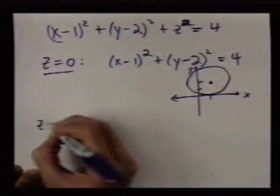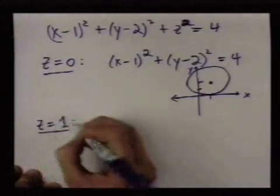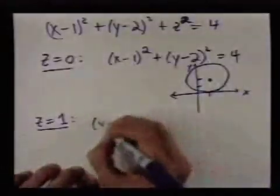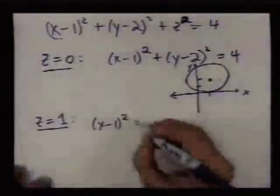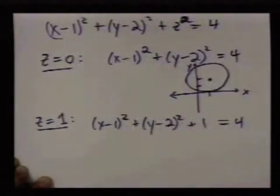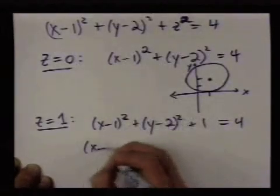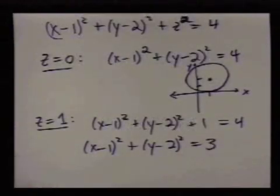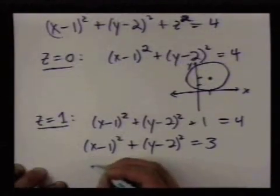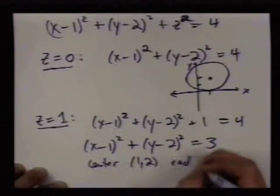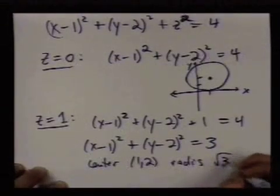And what happens when I set z equal to 1, for example? The equation turns into x minus 1 squared plus y minus 2 squared plus 1 equals 4 or just subtracting the 1 to the other side, you get 3. And now we have a circle with center 1, 2, and radius square root of 3.